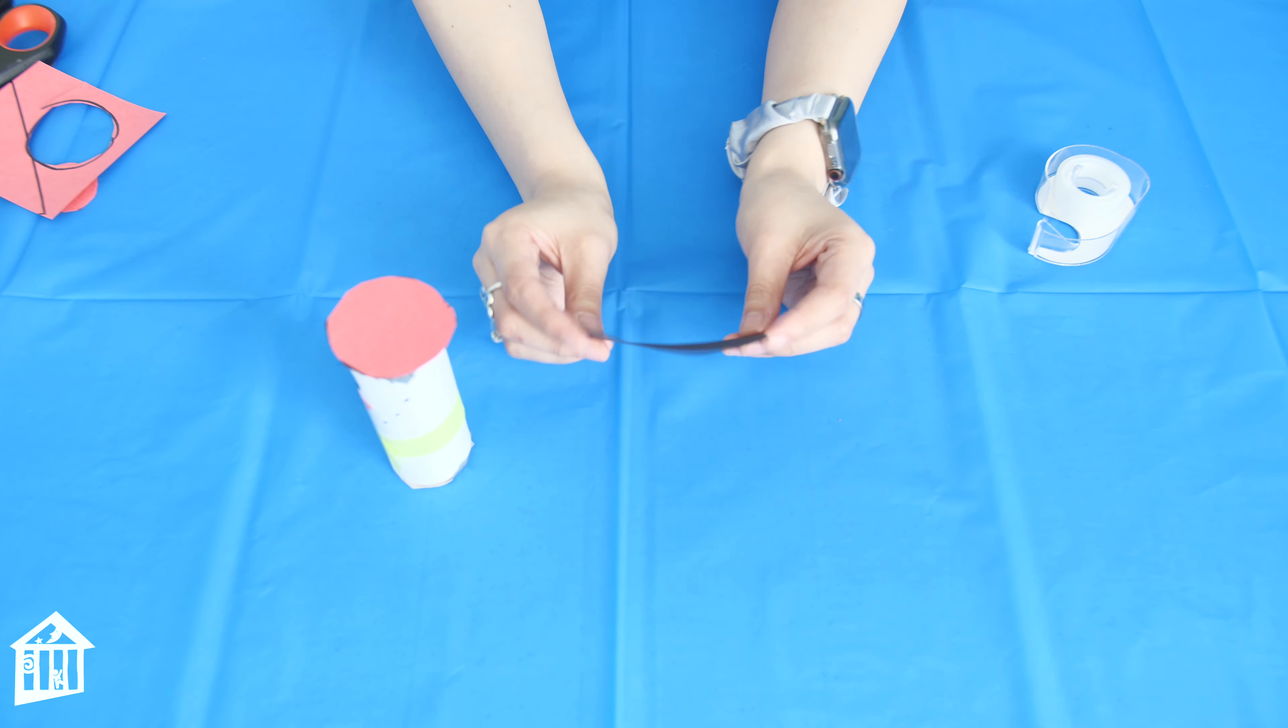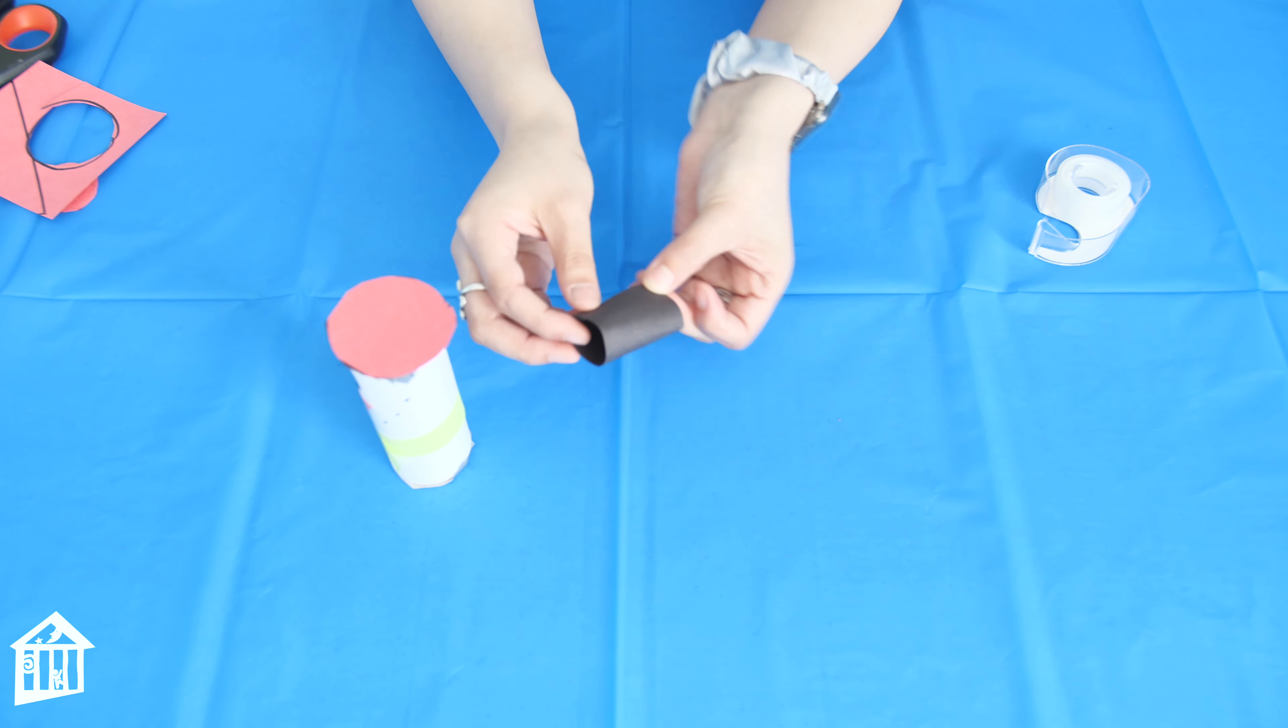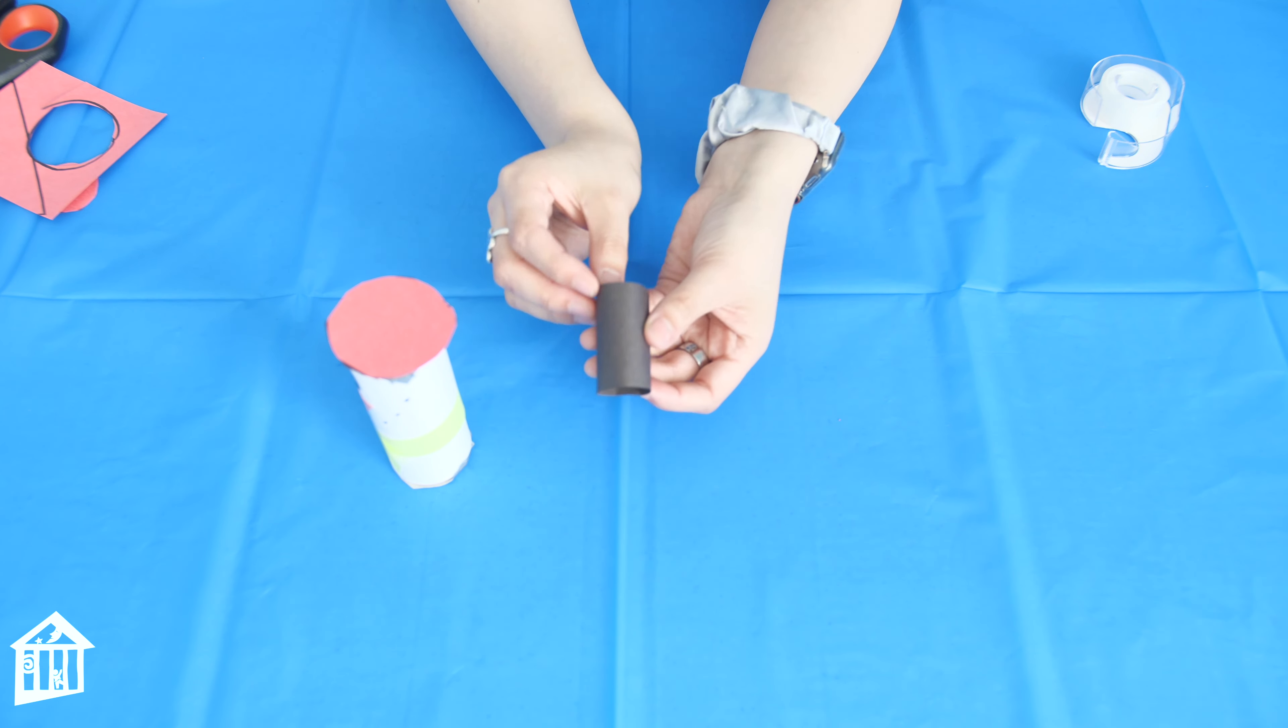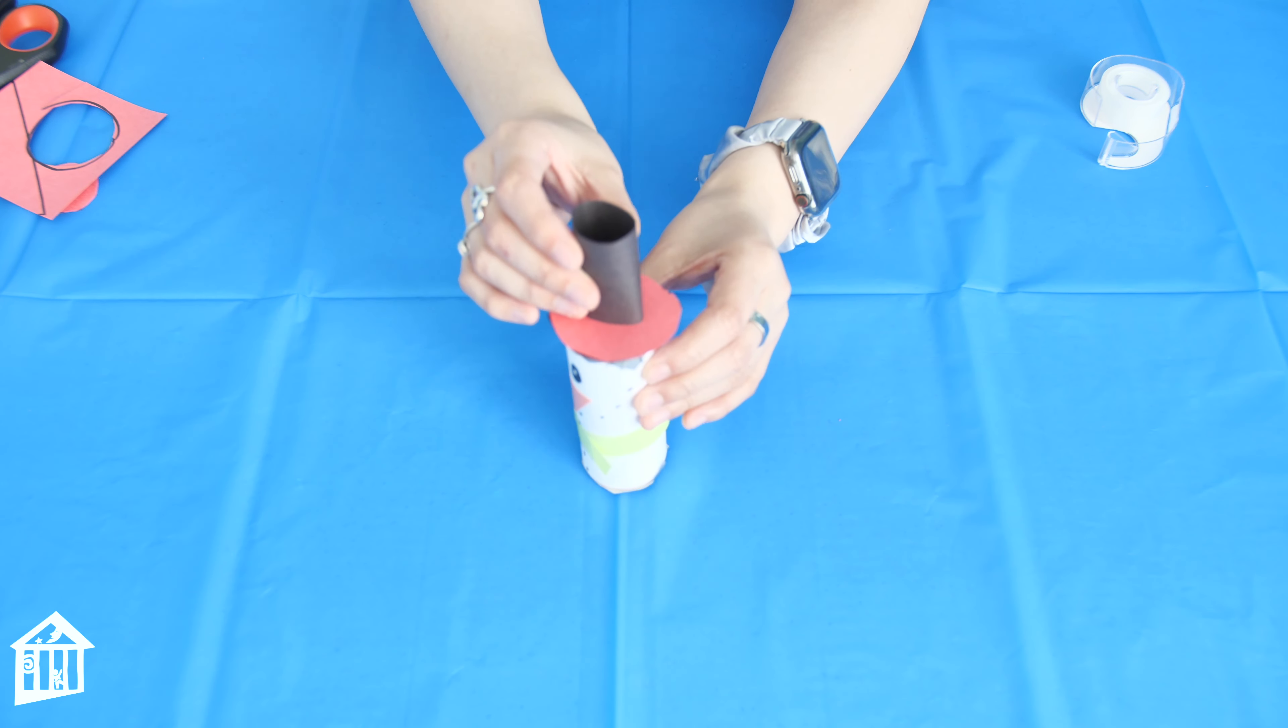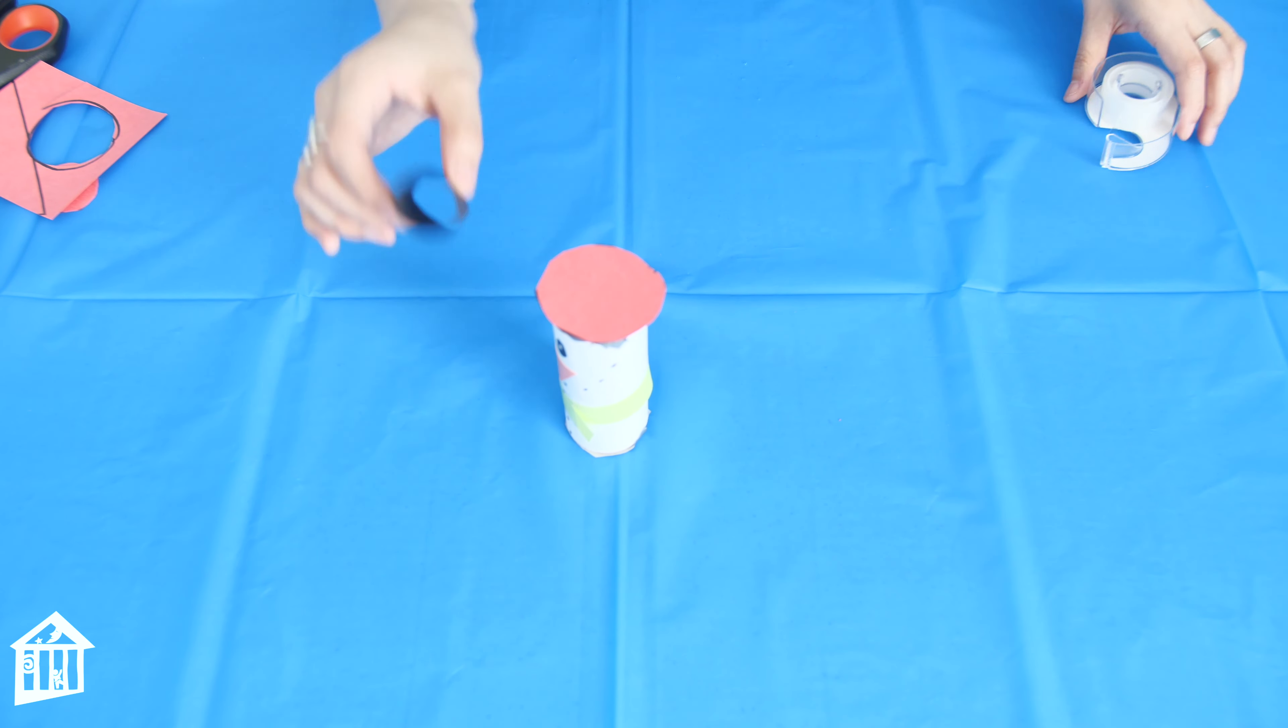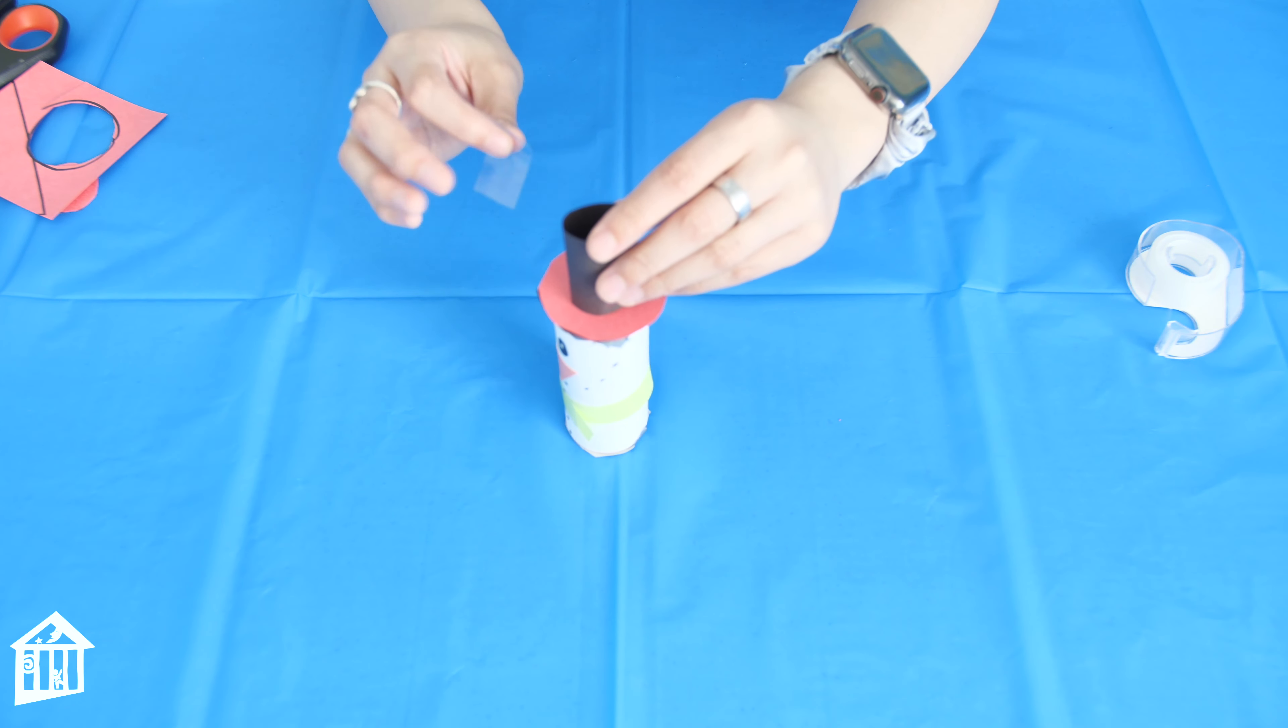Next, to make the top of your hat, you're gonna grab a piece of black construction paper. You're going to fold it to make it into a cylinder and place a piece of scotch tape right here, or duct tape, whatever type of tape you have. Just like that. So when you place it on top, the hat will be complete.